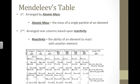The first thing that he used was an arrangement using the atomic mass. So the atomic mass is just the mass of a single particle of an element. So if we had like H2O, the atomic mass of oxygen would be the mass of one oxygen particle.